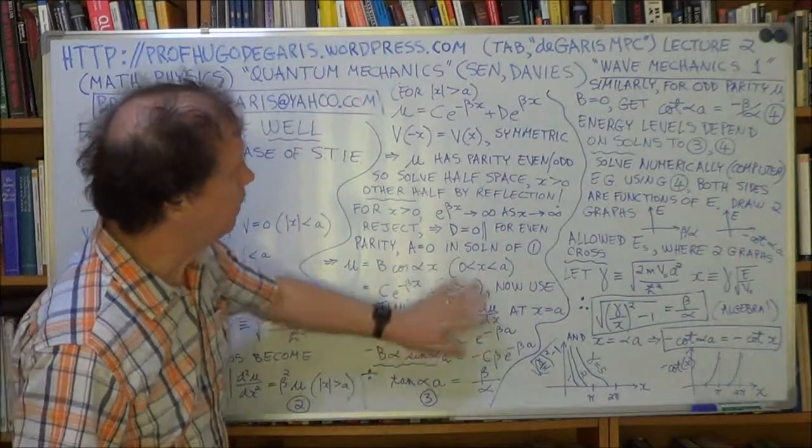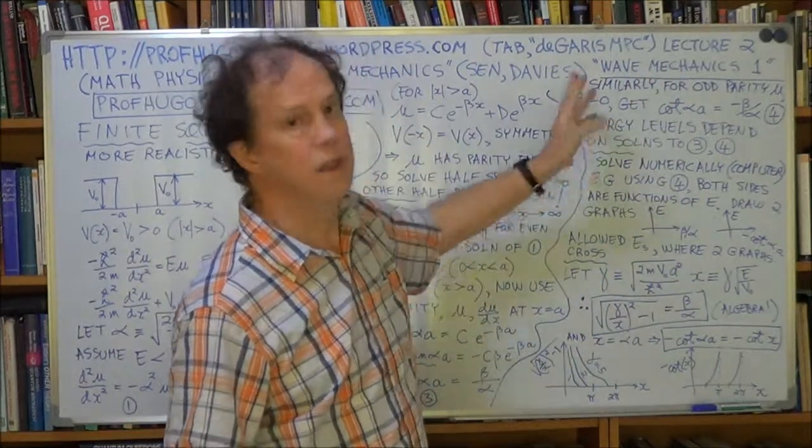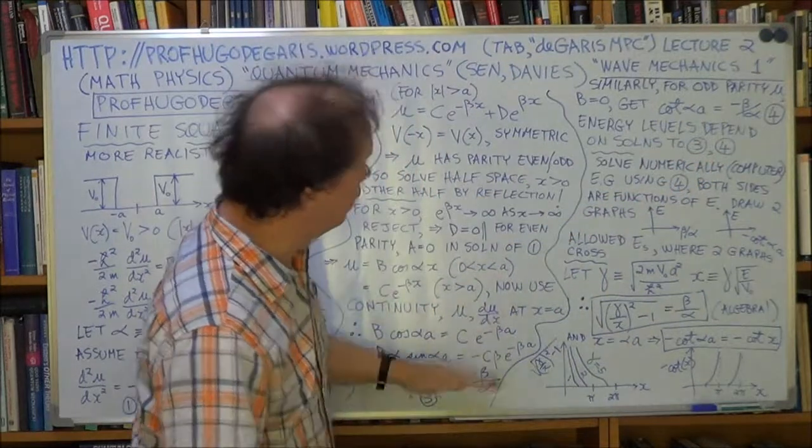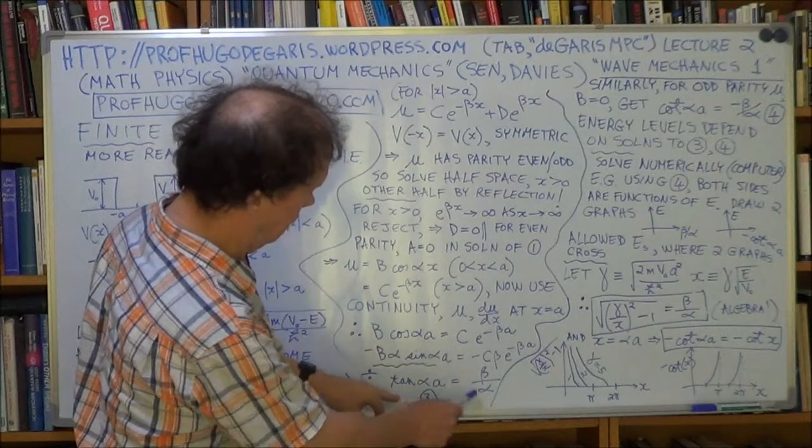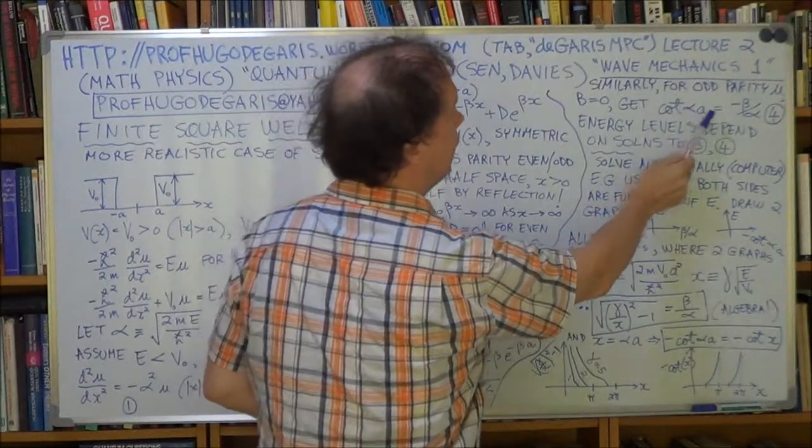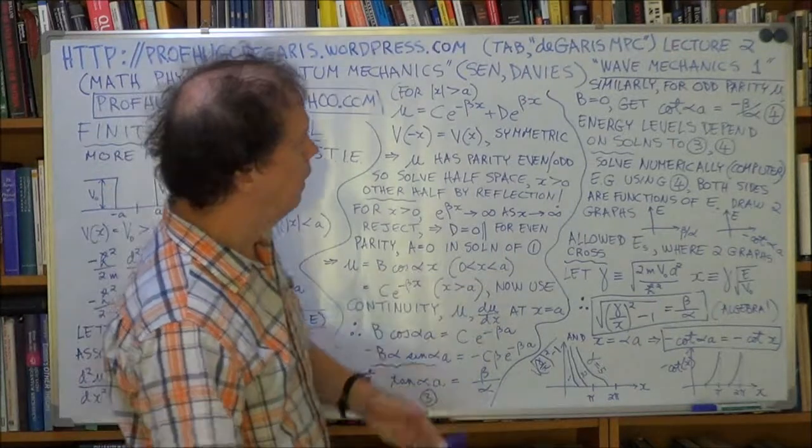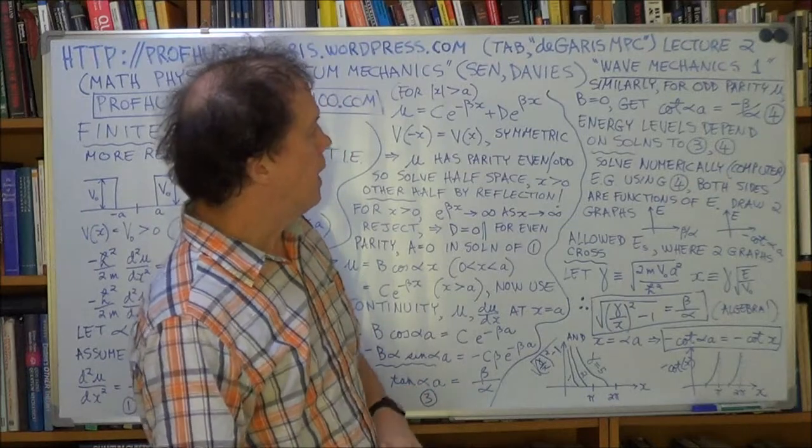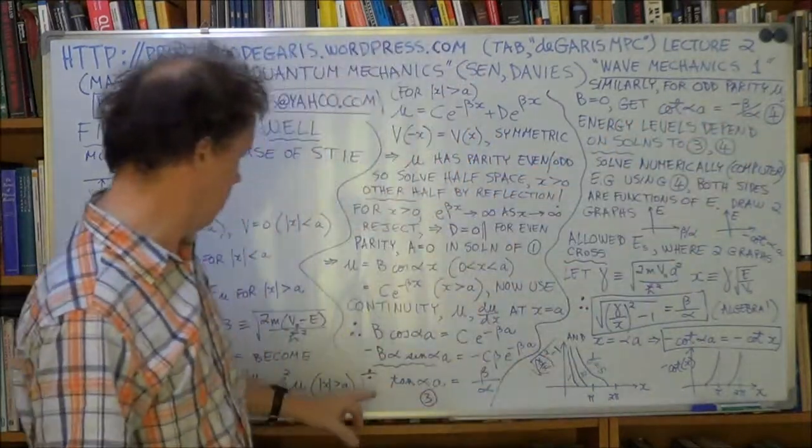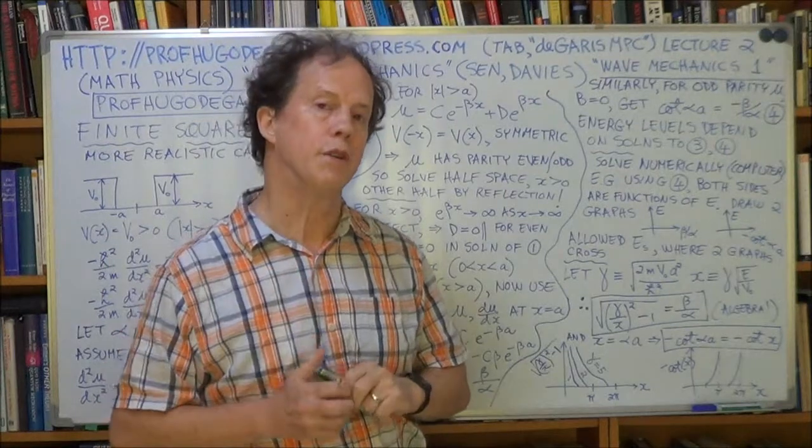So you do a similar analysis to here and I'll ask you to do this for homework. Asking you—especially this part here, asking you to do quite a bit of homework. It's getting tougher. It's a senior level course. So you do a similar analysis and you'll end up with something equivalent to this. This is equation 3 and you'll end up with equation 4 for the odd parity case and it'll be cot, cot alpha a equals minus beta over alpha. Just do a similar analysis to here. Impose these two conditions and you'll get this. Okay, so what? What can we do with that? Now these—so we have these two constraints.